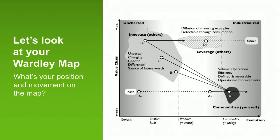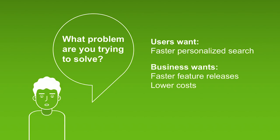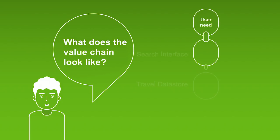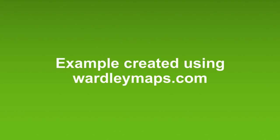One of the things you can ask customers or ask yourself: what's your Wardley map? What's your position and movement on the map? Because the key thing about a map is it shows where you are and also how you're trying to move. I'm going to come up with a specific example that's quite simple but hopefully still quite useful — I'm going to talk about travel search. You can draw these maps yourself, but you can also create them using a website called wardleymaps.com. So these are screenshots from the wardleymaps.com site.